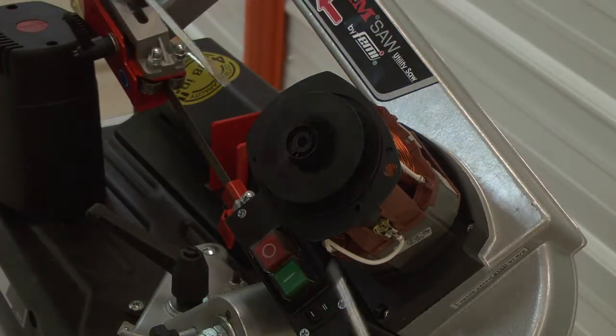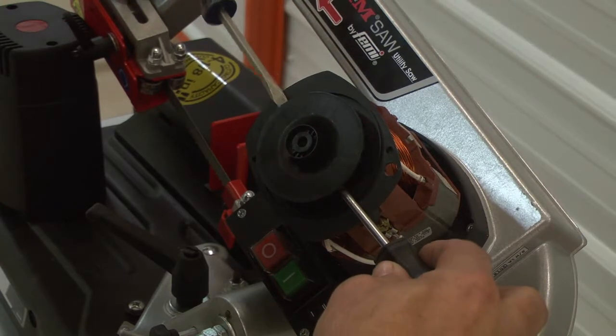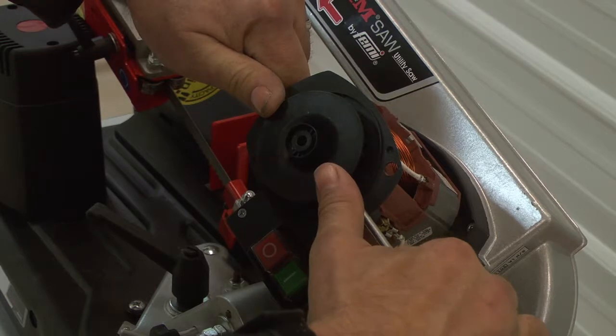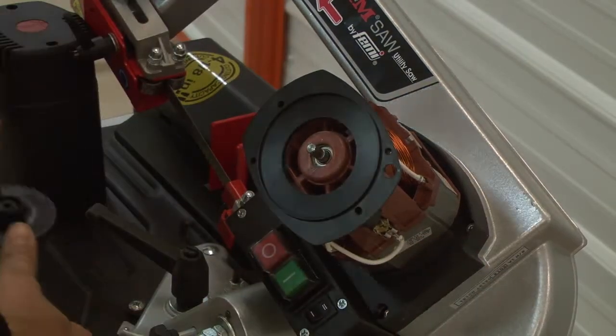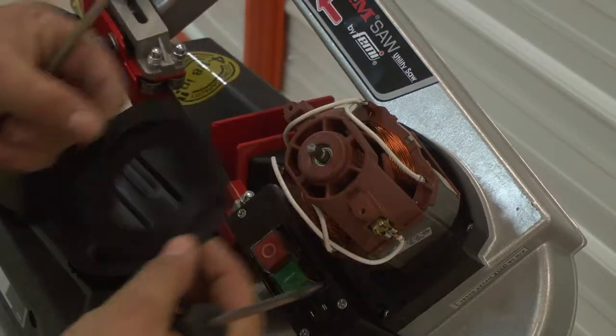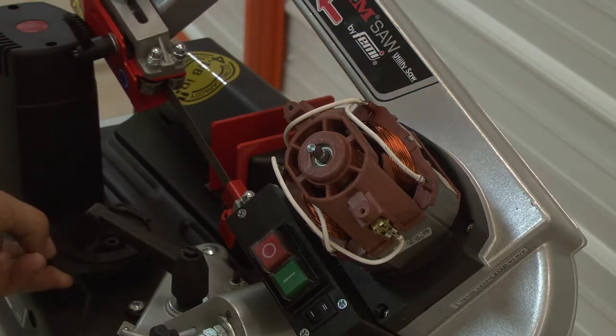Next, use two small flat blade screwdrivers to gently pry the fan up and off of the motor shaft. There will be a thin dust cover beneath the fan that must also be lifted off the motor housing.